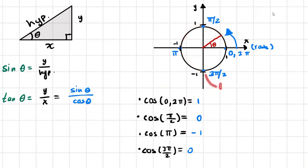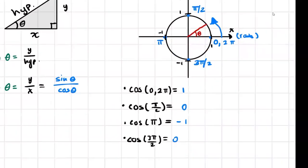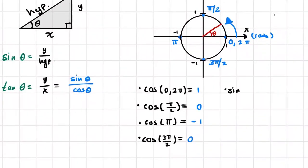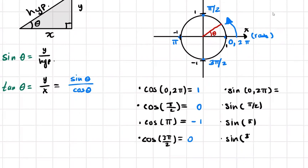At cosine of three pi over two, there's no x — you can see x is zero. The point there is zero comma one, so it's basically the coordinates. Now let's do the same for sine. For sine of zero or two pi, and then sine of pi over two, sine of pi, and sine of three pi over two — you can see that for sine of zero or two pi, whenever we are at that starting point the coordinates will be one comma zero.